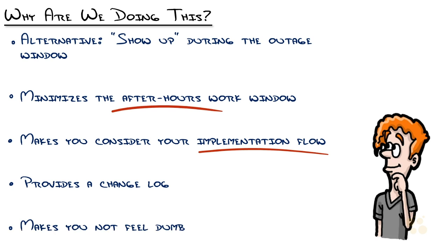And probably the biggest advantage in my mind is it makes you not feel dumb — and this doesn't mean what I think you might think it means. There is a weird enigma when you actually get on site and you're sitting there in an MDF or a data center with all the whirring equipment around you, blinking lights everywhere, your brain just kind of doesn't work like it normally should. Dots you could normally connect when you're sitting in an office by yourself drawing on a piece of paper — how everything should flow — just don't work when you're there in person. You'll often reach a point where you're just staring at the equipment going, why am I so lost? I know this stuff. There's just too many things going on in your head at the same time. So I prefer not to feel dumb.